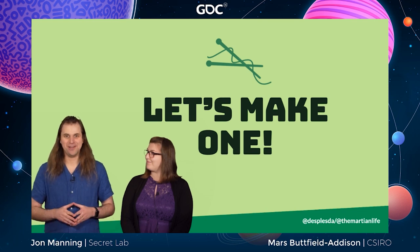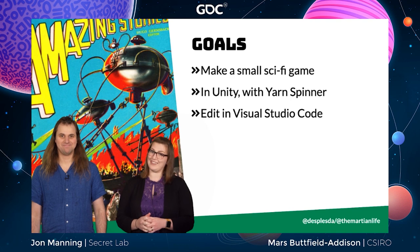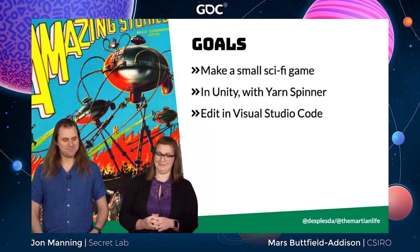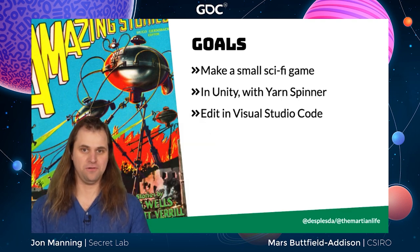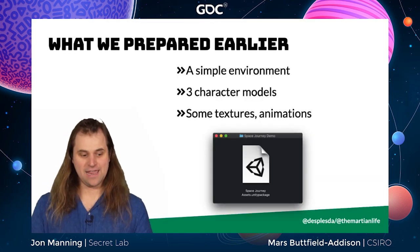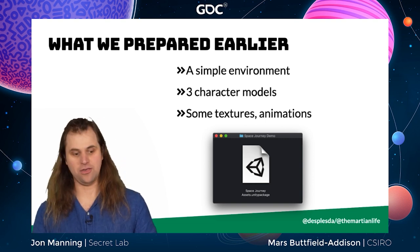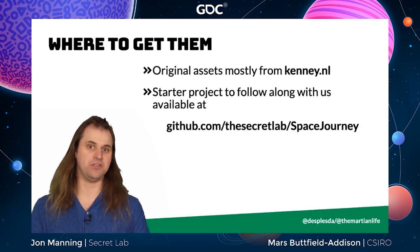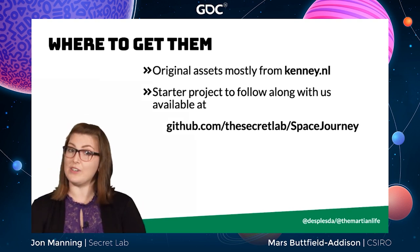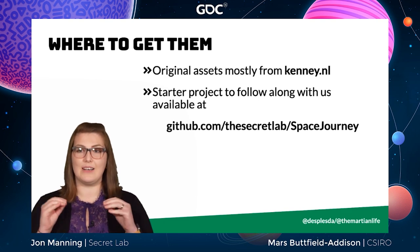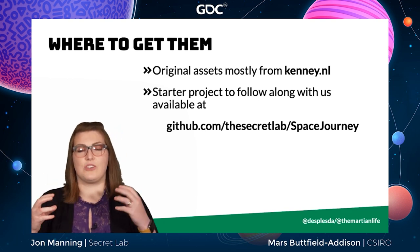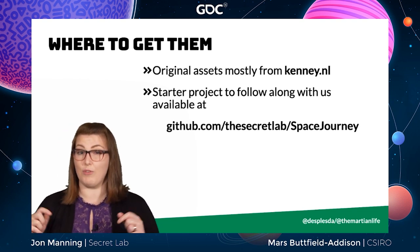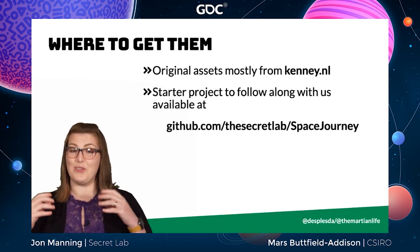So let's make one! We had a bit of a debate, and I won, because I like space — so we're going to make a game about being on a spaceship. We're going to use Unity, Yarnspinner, and Visual Studio Code for text editing. We're not starting from scratch; we have a 3D environment, character models, textures, animations — all from Kenny.nl with some additions. We've also written two simple C-sharp scripts. All of this is available right now on GitHub for free.